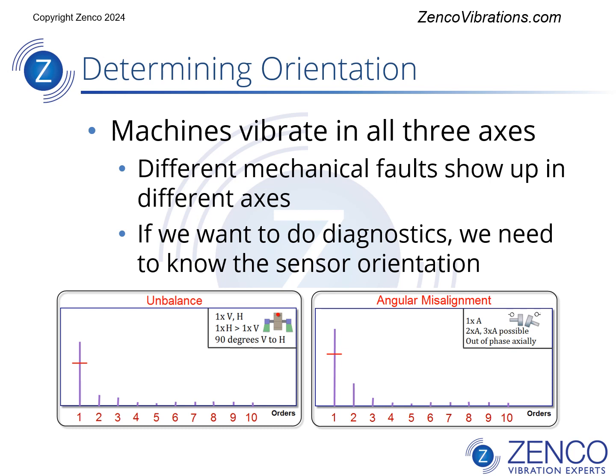Machines vibrate in all three axes. Different mechanical faults show up in different axes. For example, unbalance shows up in the vertical and horizontal directions, whereas angular misalignment shows up in the axial direction. If you want to do diagnostics, you have to know the sensor orientation. It's not enough to just know X, Y, Z, or 1, 2, 3 of your sensor — we need to know how they're oriented compared to the machine.